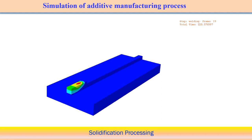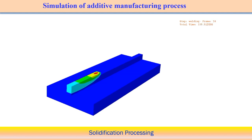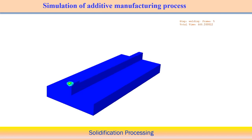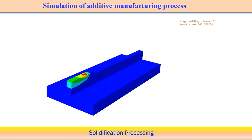By fixing a particular position in space and tracking the time versus temperature diagram at that point, we can estimate the cooling rate. By taking different cross-sections and measuring temperature, we can calculate the temperature gradient at each point. Simulation therefore helps estimate G and R parameters directly, which can be used to predict solidified structure in different additive manufacturing processes.